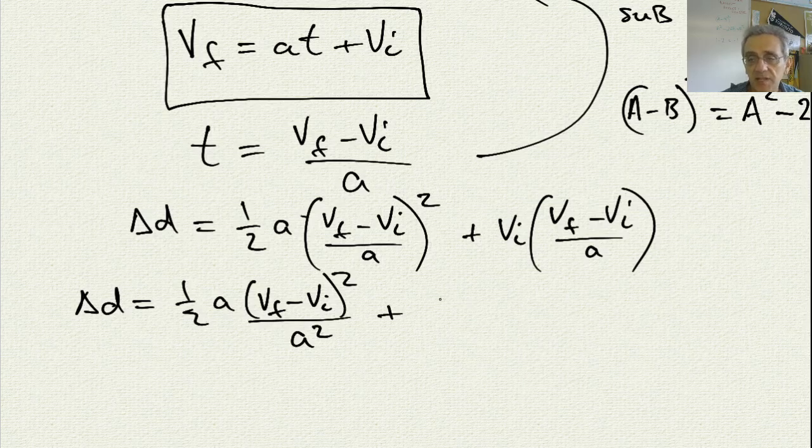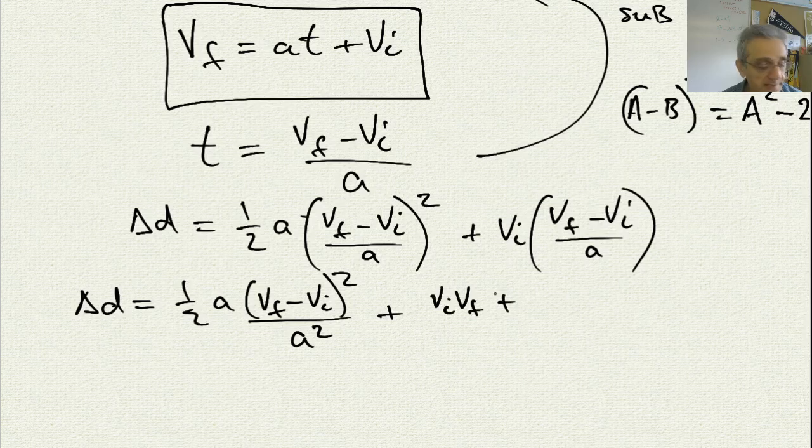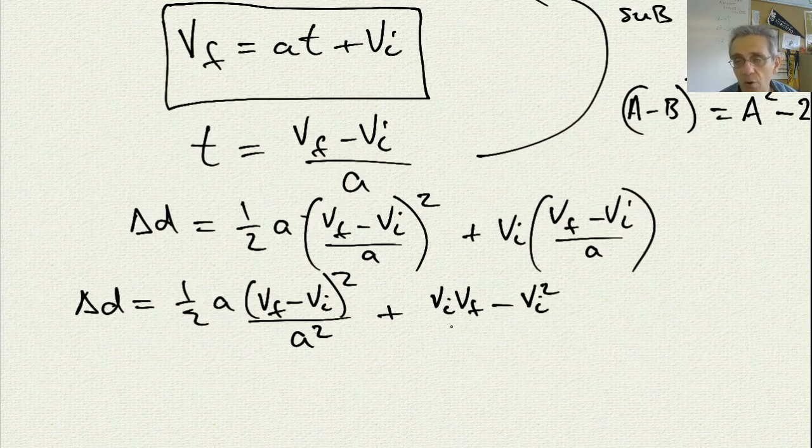And then here on the top, I'll have v-i, v-f, not plus, minus vi squared. And then all this is divided by a.